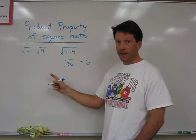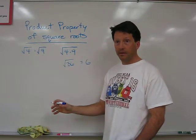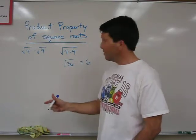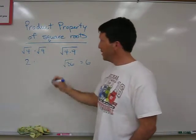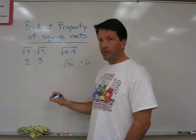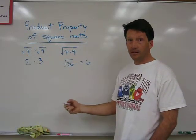Now if we look at the other side and we have those two separate, the square root of 4 is 2, and the square root of 9 is 3. And then if you multiply 2 and 3 together, you get 6 again.